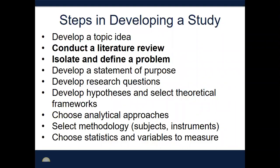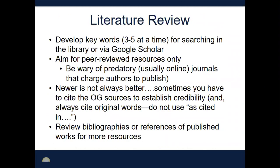Now that we've talked about developing a topic idea, let's jump into a literature review and then isolating and defining a problem. As you're conducting a literature review, it's helpful to develop some keywords — like three to five at a time — for searching in the library or via Google Scholar. Google Scholar is useful because you can connect it to your library as well. Use alternating words; for instance, sometimes I'll type in 'undergraduate' or 'college student' or just 'college.' There are multiple ways to describe your population or topic.